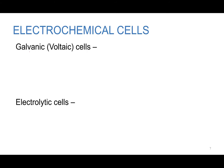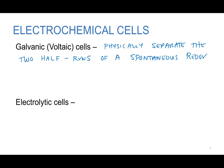Now galvanic and voltaic cells are ones we'll start talking about first. What these electrochemical cells do is they physically separate the two half reactions of a spontaneous redox reaction to generate current.